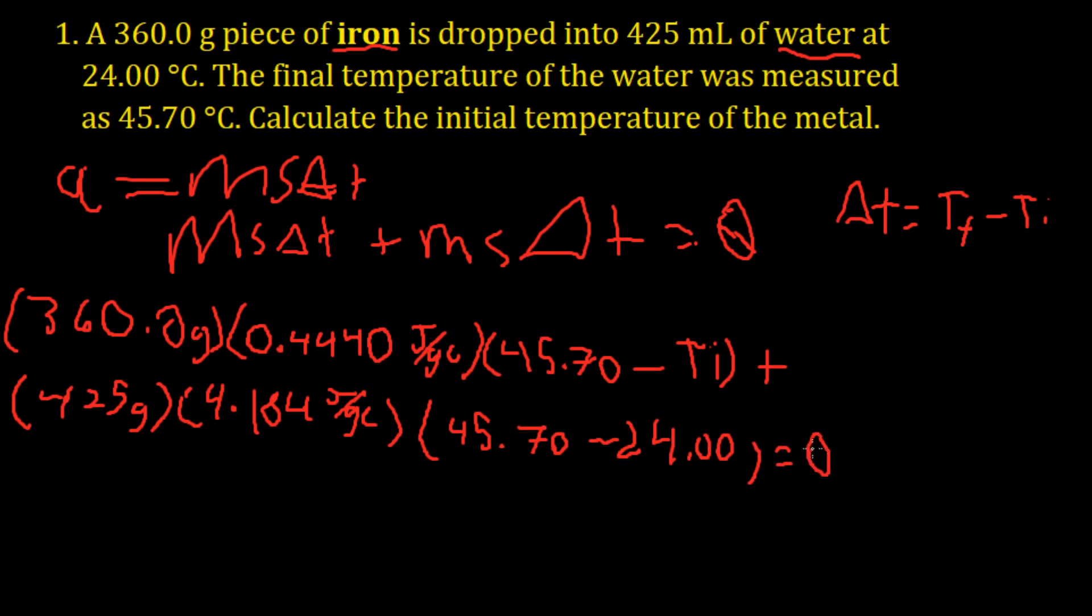Now before we continue with this problem, let's calculate the delta t of water real quick. 45.70 minus 24 is 21.7 degrees Celsius.